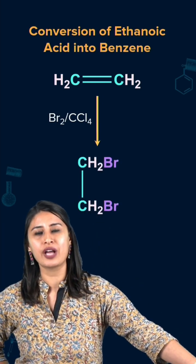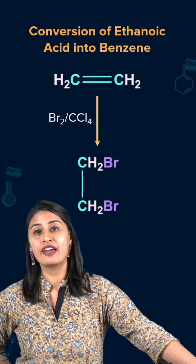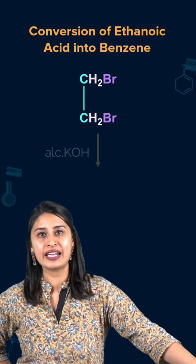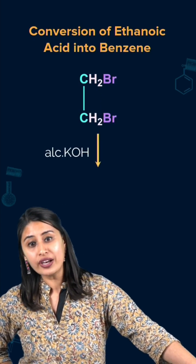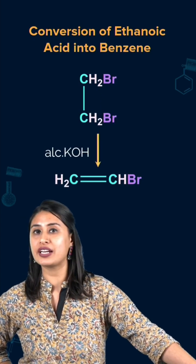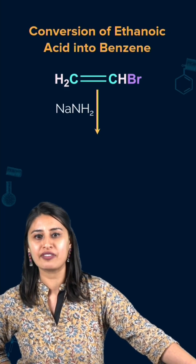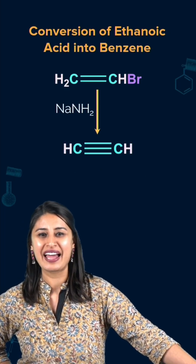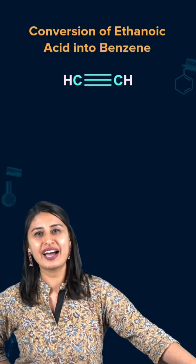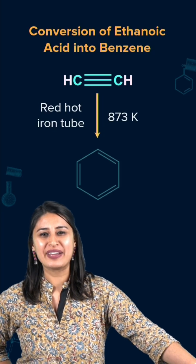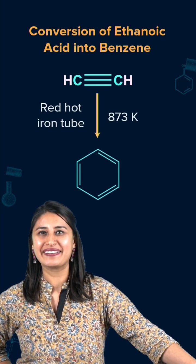Now to this 1,2-dibromoethane, if we do elimination twice — first by adding alcoholic KOH we get vinyl bromide, and then by adding sodamide we get ethyne. And once we have ethyne, we will get benzene!